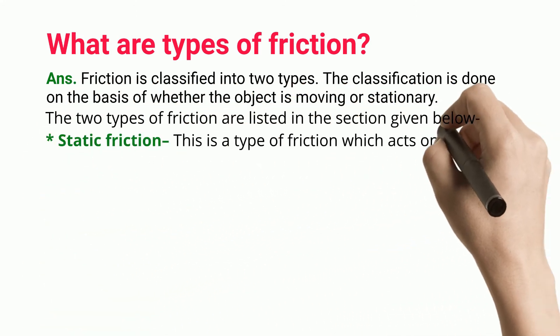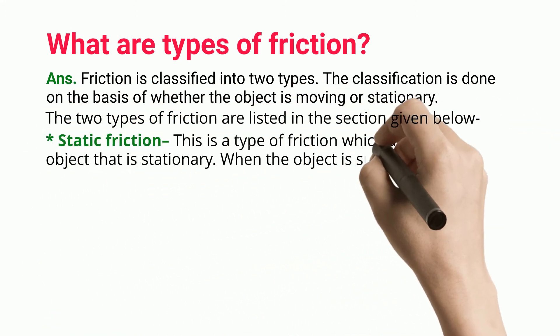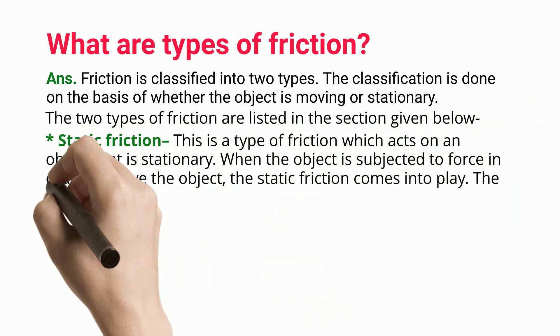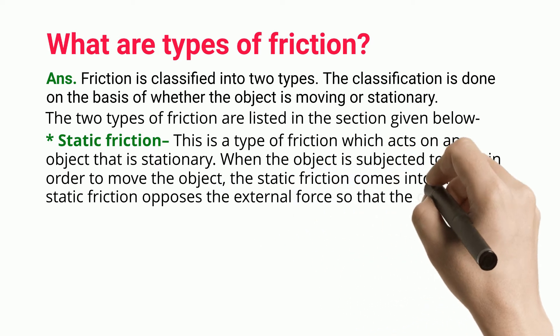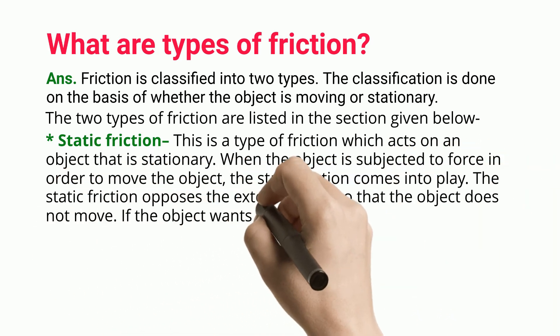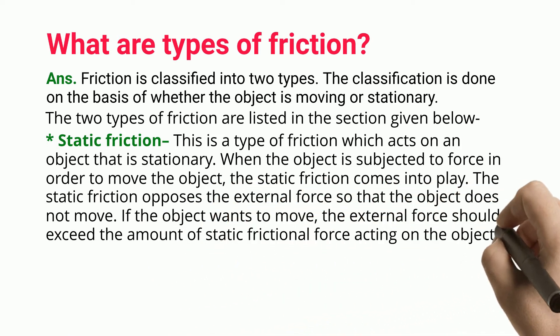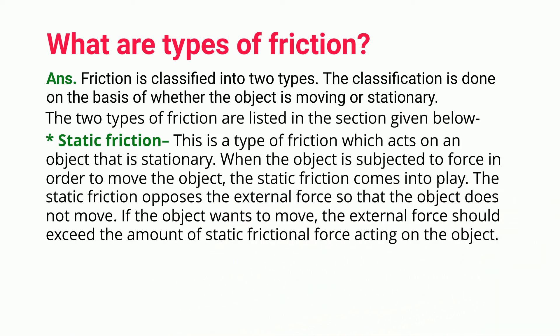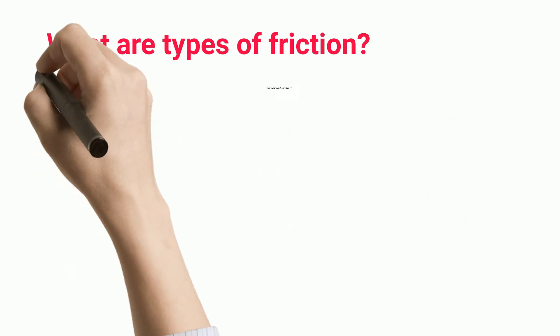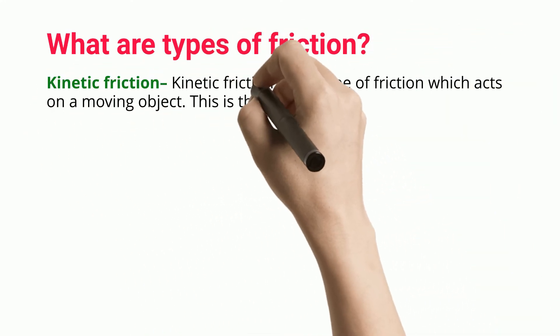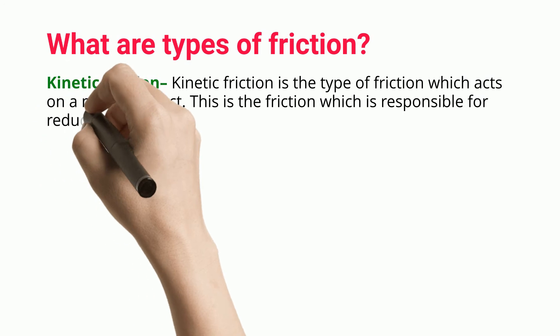Static friction is the type of friction which acts on an object that is stationary. When the object is subjected to a force in order to move it, static friction comes into play. The static friction opposes the external force so that the object does not move. If the object is to move, the external force should exceed the amount of static frictional force acting on the object.